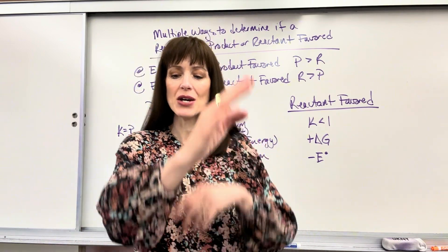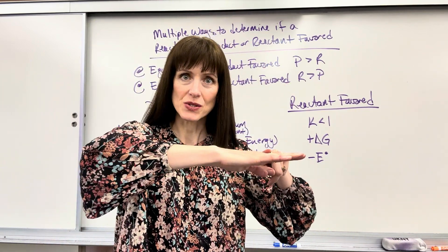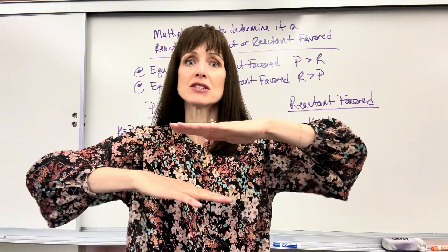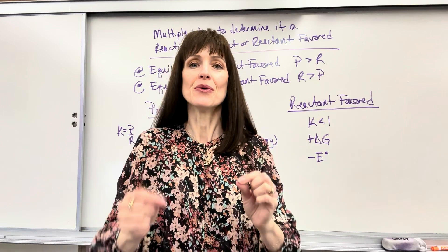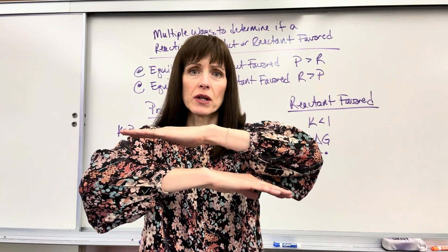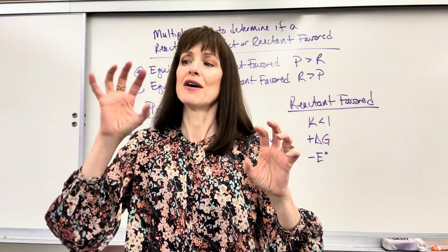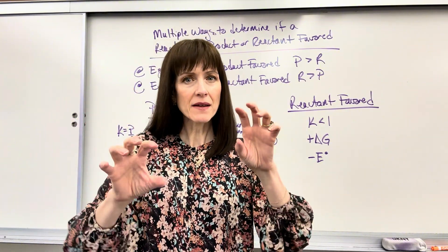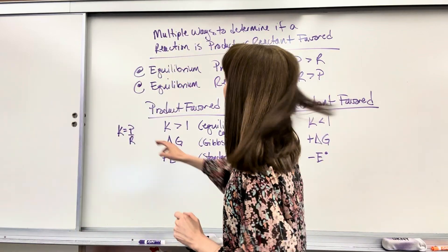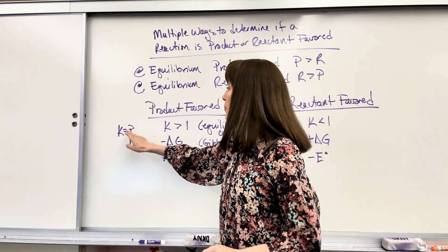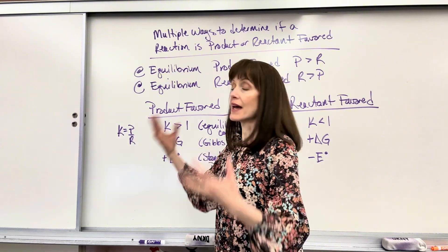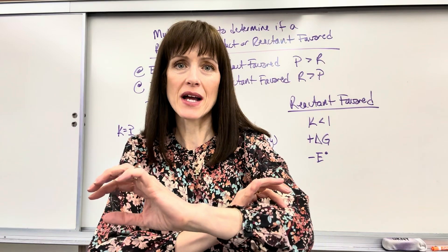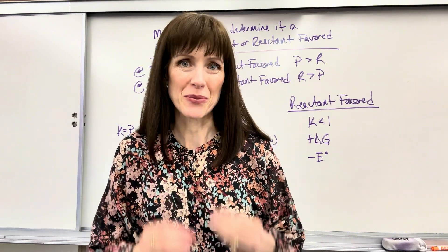Reactants go to products at a certain rate, and products go back to reactants at a rate. When those rates are equal, you have equilibrium. When you hit that equilibrium, the amounts of the reactant and product are constant — not the same, but constant. And when we compare the amounts of reactant to product in the equilibrium expression K — products divided by reactants — that informs us: do I have more reactants or more products at this equal-rates equilibrium?